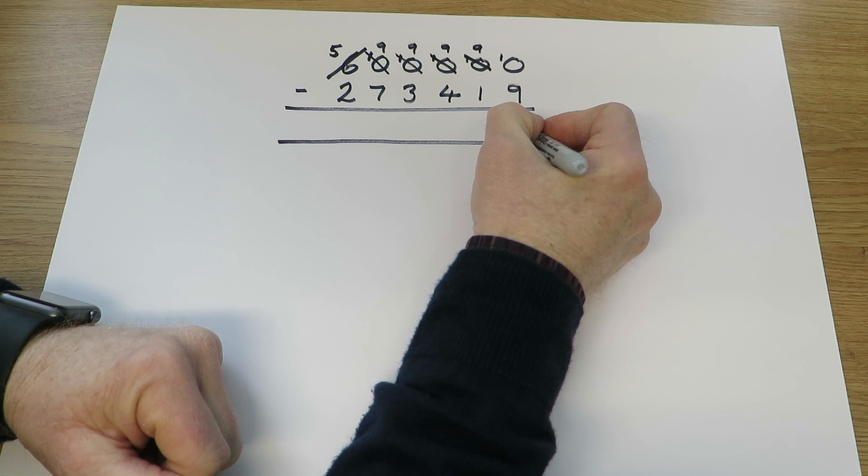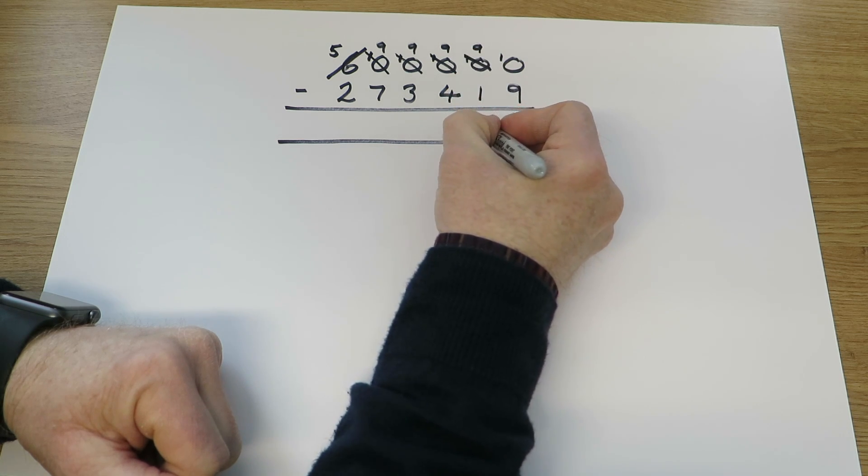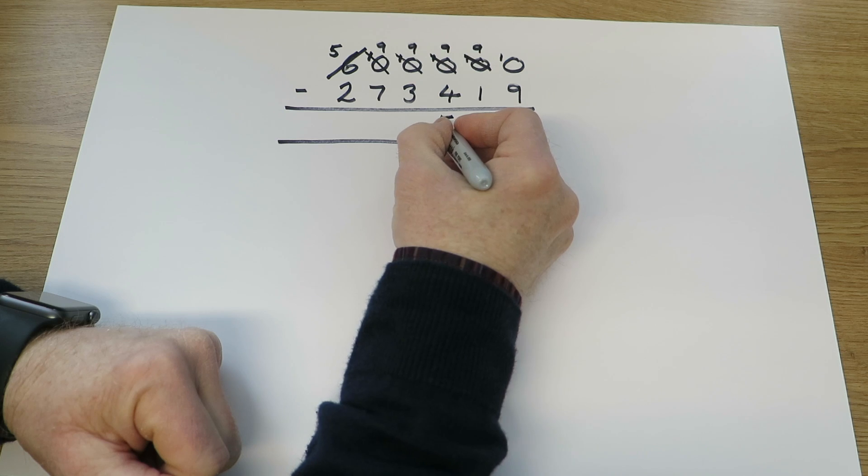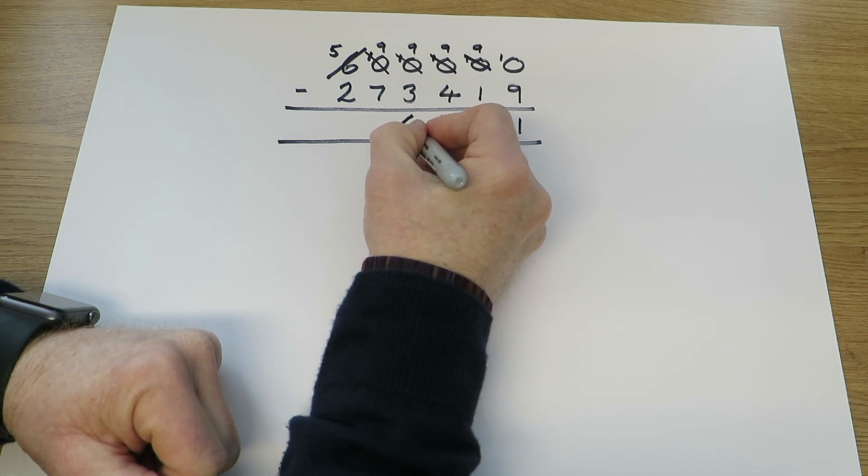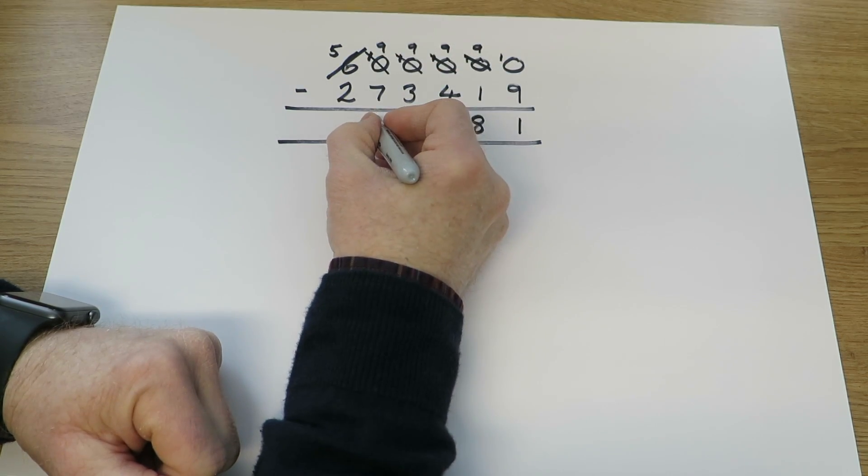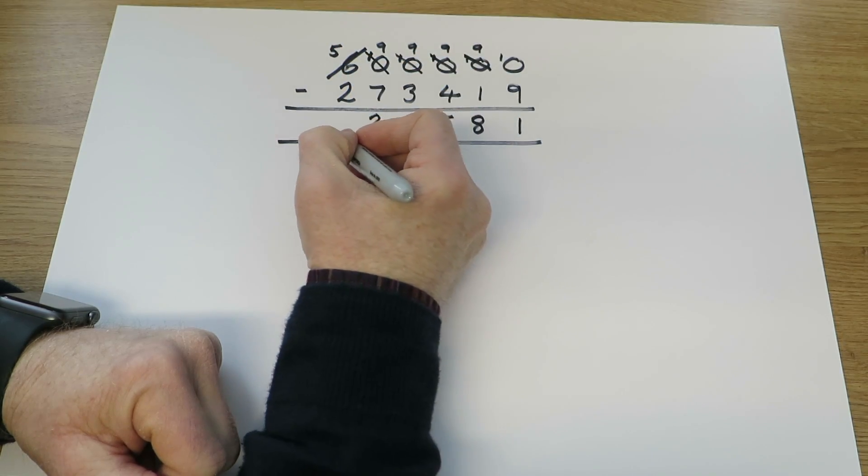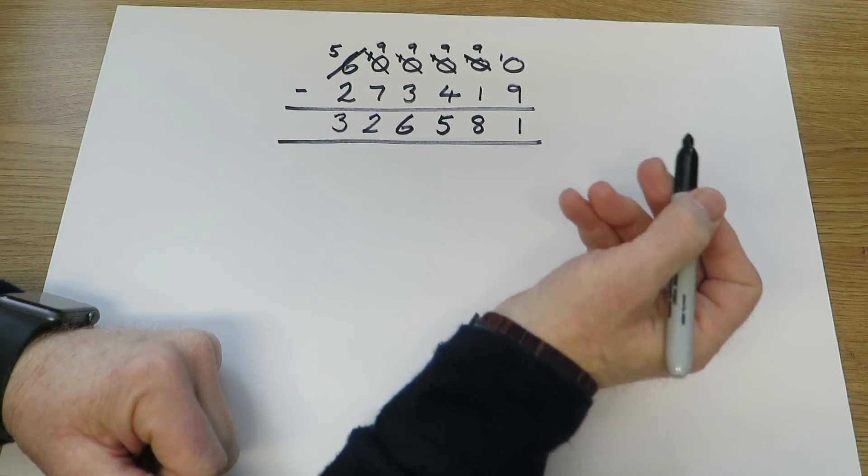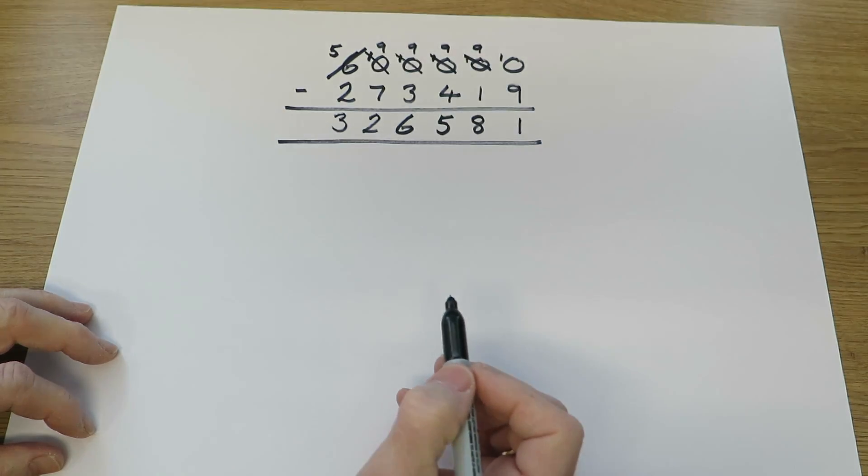10 take away 9 is 1, 9 take away 1 is 8, 10s, 9 take away 4, 500s, 9 take away 3, 6 thousands, 9 take away 7, 2, 10 thousands, and 5 take away 2, 300 thousands, 326,581.